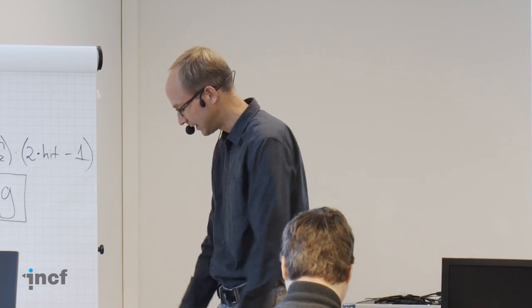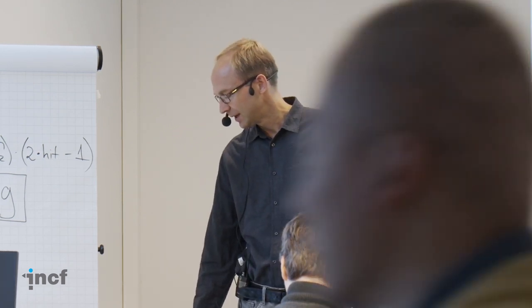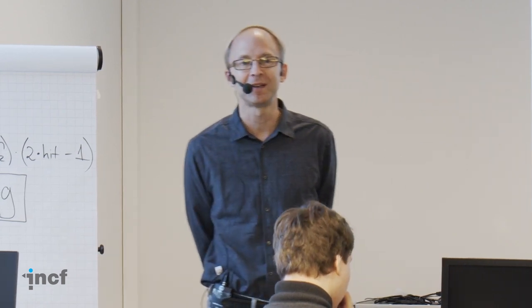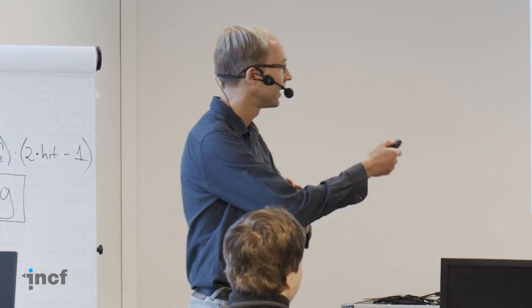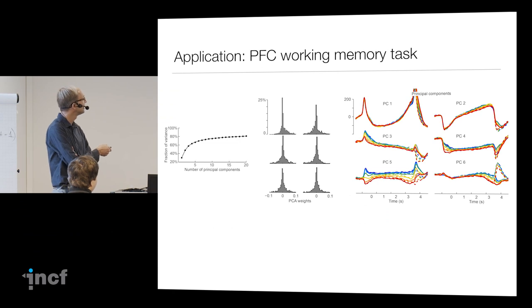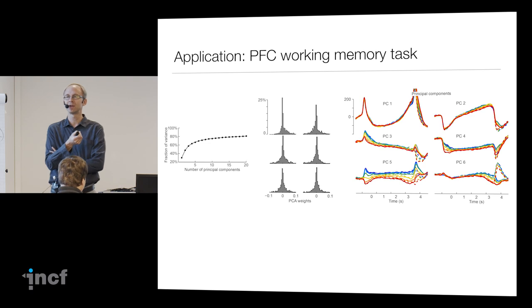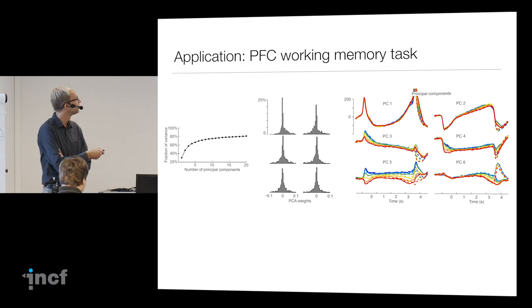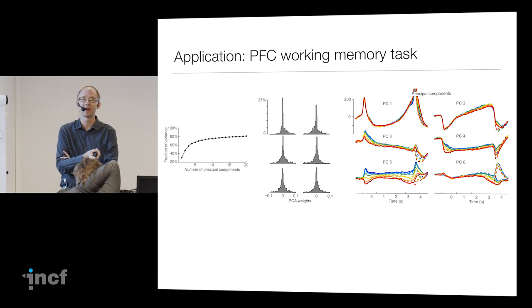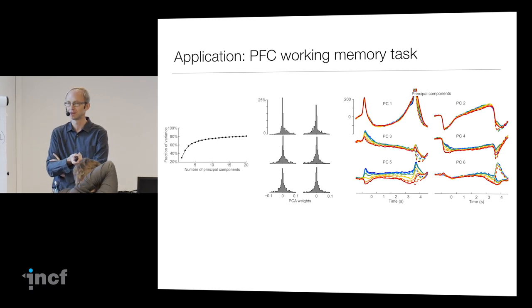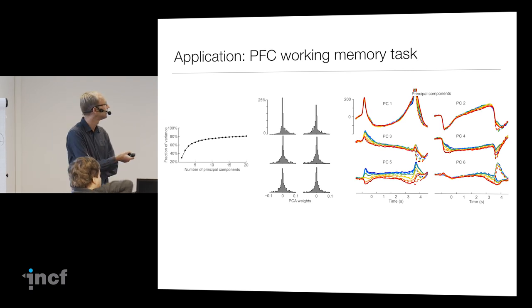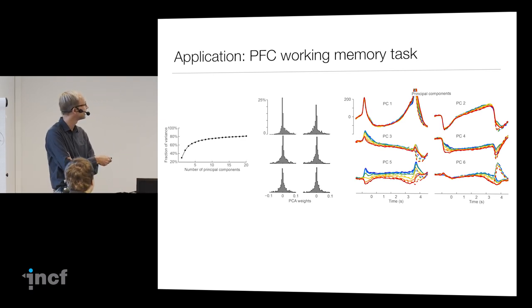Once you've finished the PCA exercise, you should basically have results that look a little bit like this. Here you have time. This is the projection of the first principal component, and the different colors correspond to the different task conditions. Color in this case is actually frequency f1, and dashed versus solid lines are the decision of the monkey — whether f1 was larger than f2 or not. That is the type of plot you should get out of the PCA exercise.